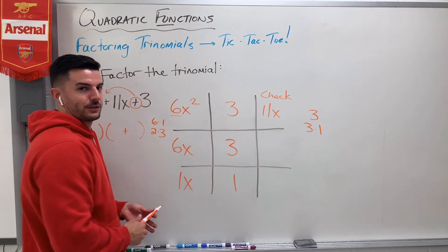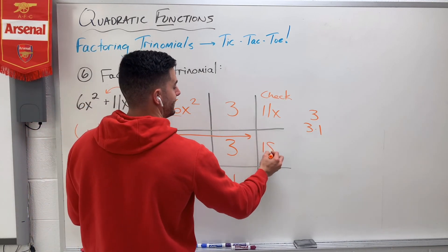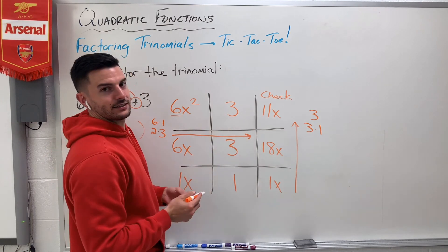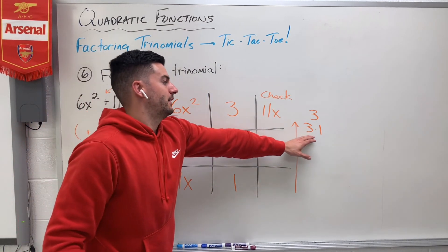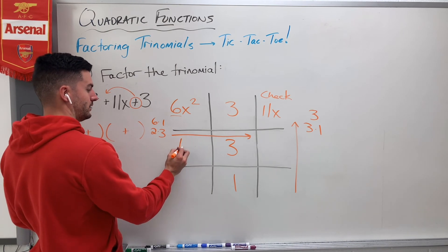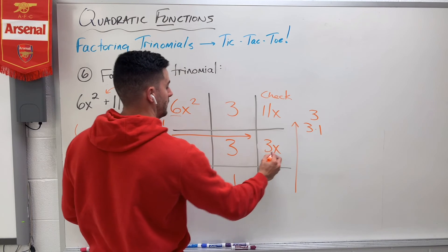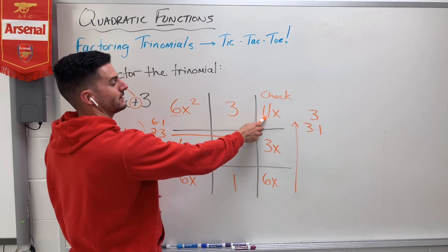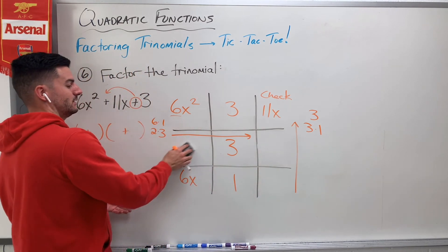These second-column numbers are going to stay the same and I might have to change the first column. Let's multiply and check. 6x times 3 gives me 18x and 1x times 1 gives me 1x. Adding them: 1 plus 18 gives me 19x — that's not 11x, so this combination did not work. Normally I would change the second column, but there are no other factors of 3. So instead let's flip the first column around — try 1x and 6x. 1x times 3 gives me 3x and 6x times 1 gives me 6x. 6x plus 3x gives me 9x — still not 11x, so this pair doesn't work either.